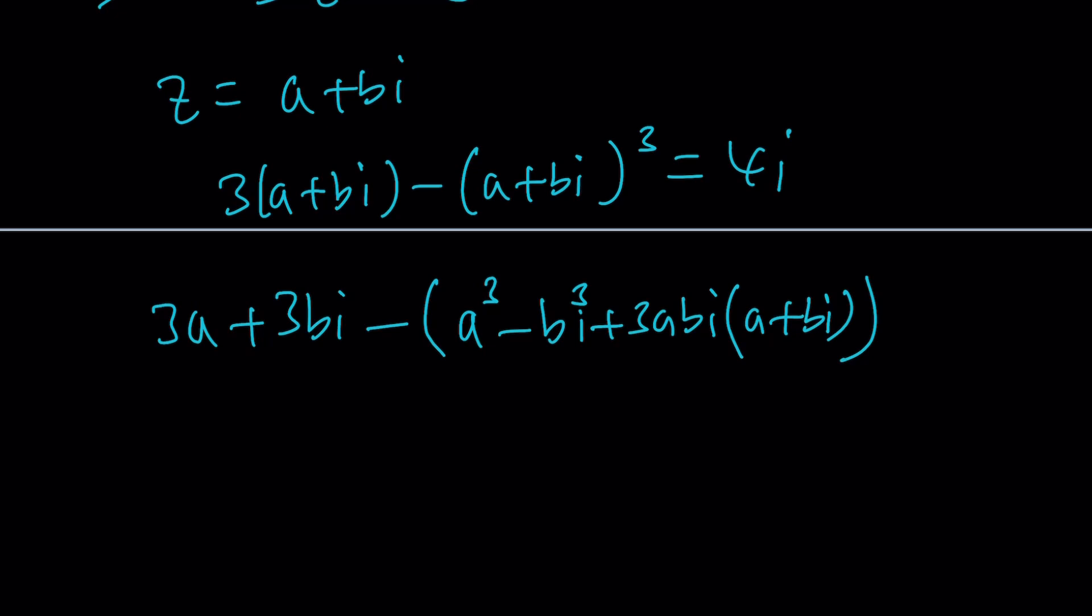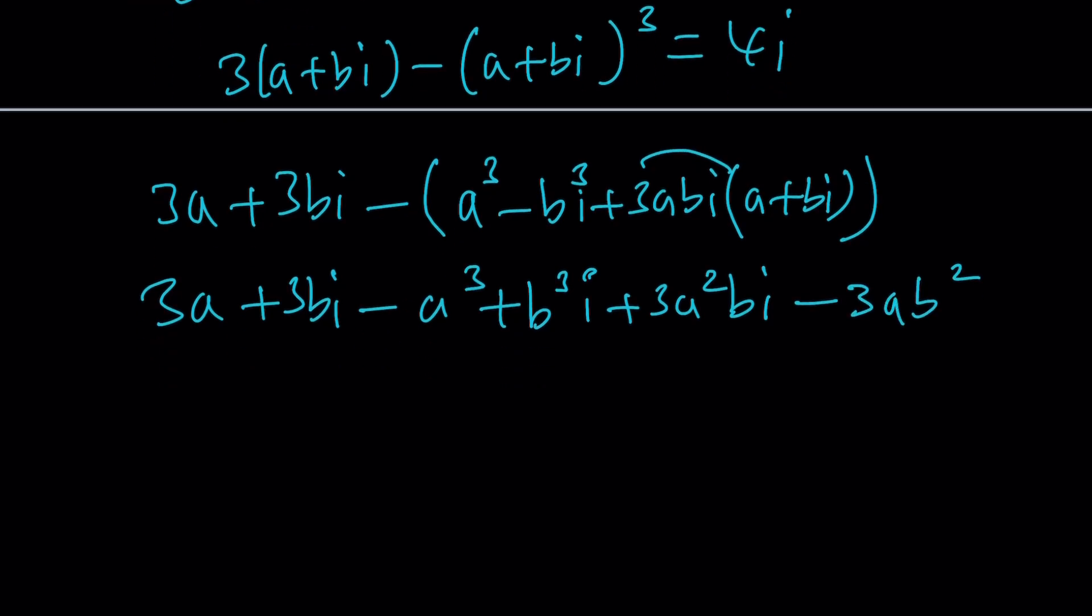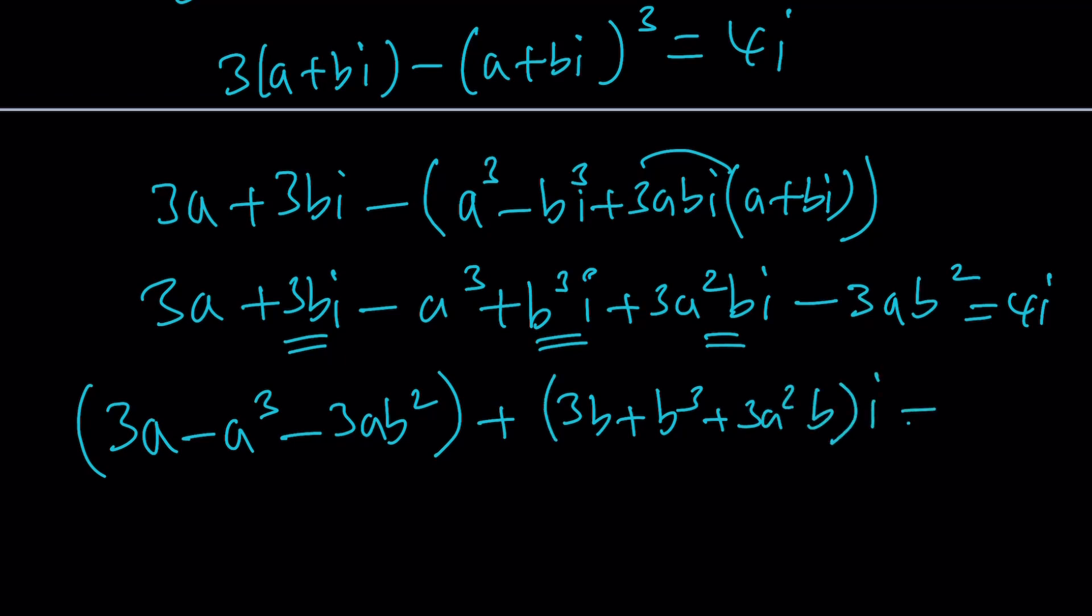So let's go ahead and simplify this further. We get 3a + 3bi. And then here, we're going to get minus a³ plus b³i. And then this, when distributed, is going to give you 3a²bi. And then minus, because i² is negative 1, 3ab². Beautiful. This is equal to 4i. And then what I'm going to do is put the real parts together. 3a - a³ - 3ab² is the real part. Plus (3b + b³ + 3a²b)i is the imaginary part.